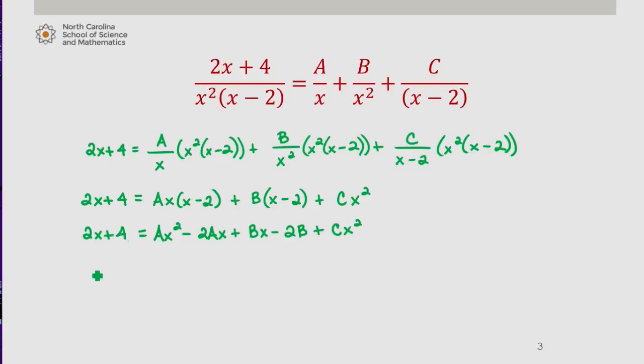And then I'm going to collect like terms. I have A plus C times x squared plus negative 2A plus B times x minus 2B.